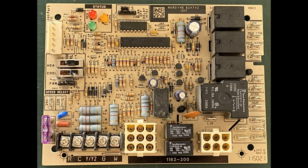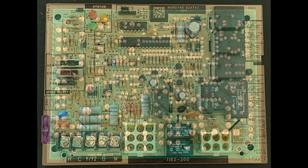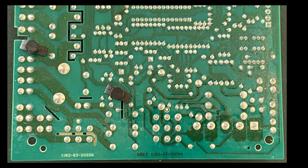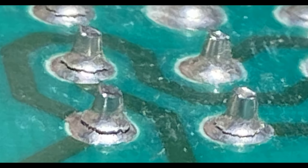Faulty control boards seem to be a common issue on Gibson furnaces where they develop tiny cracks in the solder joints on the back side of the board, leading to an open circuit and disconnecting the relay.